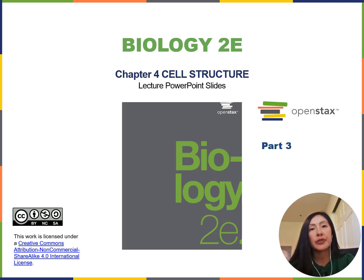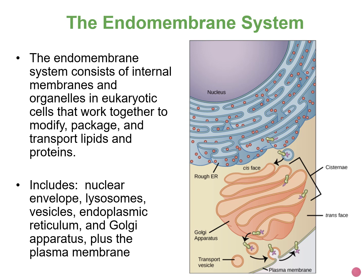Welcome back to chapter 4. In this third video we're going to be covering the components and functions of the endomembrane system. The endomembrane system — where 'endo' refers to inside or within the cell — is a group of membranes and organelles that work together to modify, package, and transport lipids and proteins. It includes the nuclear envelope, lysosomes, vesicles, the endoplasmic reticulum, Golgi apparatus, and the plasma membrane. The membranes of the endomembrane system are interchangeable.